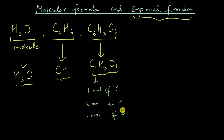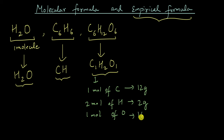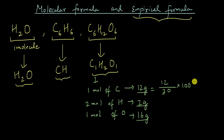So if I know this, I know that for every 12 grams of carbon, I will have two grams of hydrogen — because two moles of hydrogen is two grams — and 16 grams of oxygen, because the molar mass of oxygen is 16. Now that I have the masses, I can calculate the percentages. The percentage of carbon will be 12 divided by the total (12 + 2 + 16 = 30) times 100%, and the percentage of hydrogen will be 2 by 30 times 100%. So we can calculate the percentages using the empirical formula.